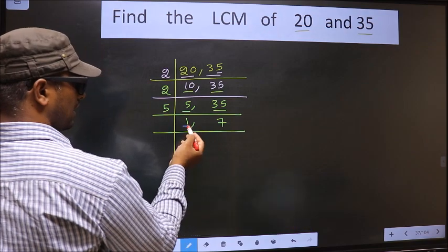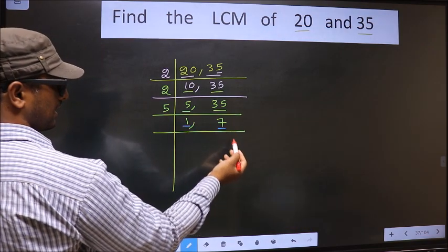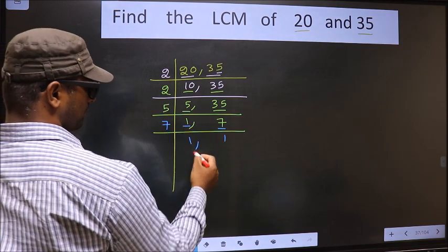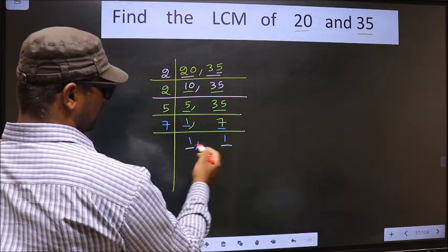We got 1 here. So focus on the other number, that is 7. 7 is a prime number, so 7 divided by 7 equals 1. We got 1 in both the places.